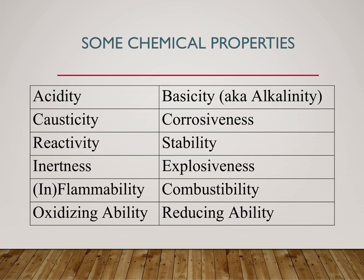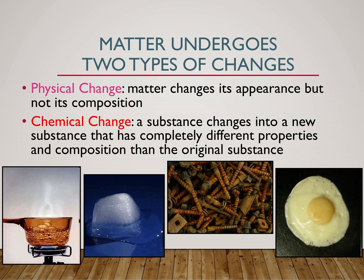Chemical properties — here are some chemical properties. These are things you can tell about your substance by changing the composition, by reacting it with something else. Does it act as an acid? Does it act as a base? Is it corrosive? Is it inert, which means it doesn't react with things? Is it explosive? Is it flammable? Can it combust? All of these are chemical properties, and the only way we can find these out is by changing the composition — by reacting it with something or by combusting it. These will change the composition of your substance, whereas physical properties do not.